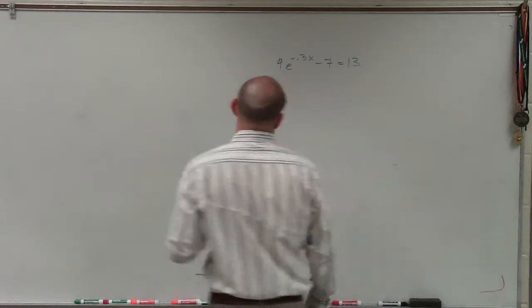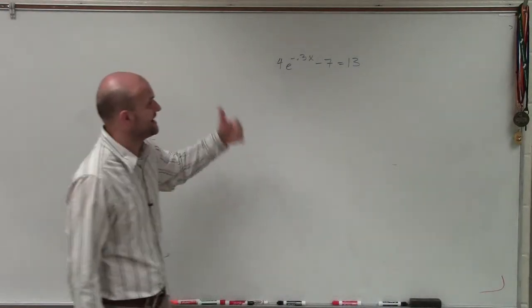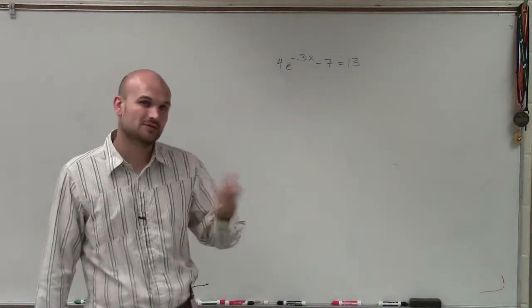Welcome. All right, so in this case, what I have is 4 times e raised to the negative 0.3x minus 7 equals 13.